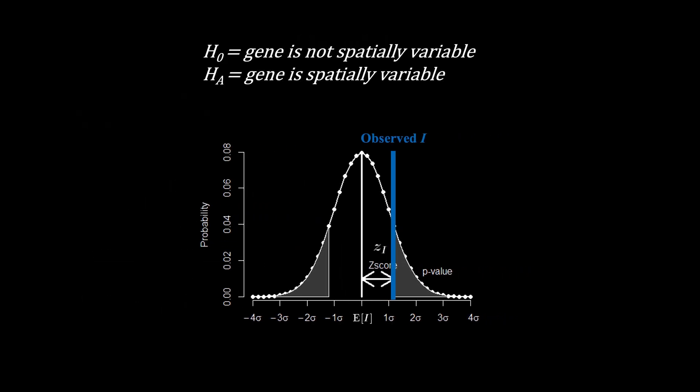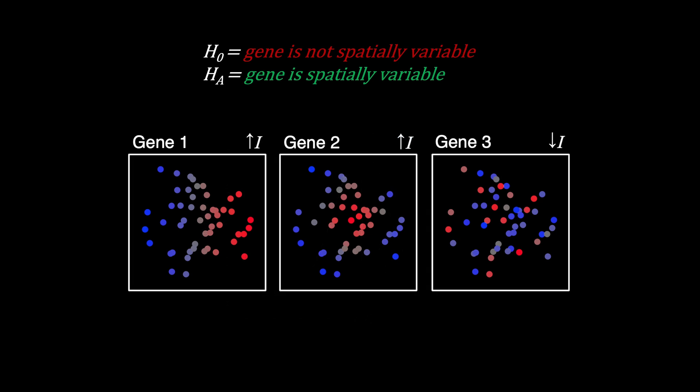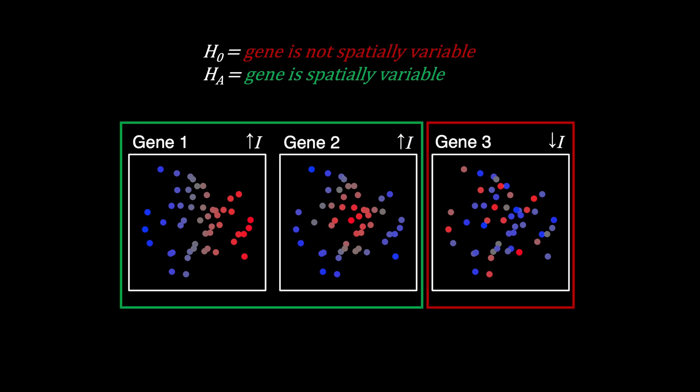This test is effectively evaluating whether we have sufficient evidence to reject the null hypothesis H0 that a gene is spatially random and is therefore not spatially variable, in favor of the alternate hypothesis H1 that the gene is exhibiting non-random coordinated spatial variation and therefore can be deemed spatially variable. If we apply such statistical evaluation to our examples, we should find that gene 1 and gene 2 are significantly spatially variable, but gene 3 is not.